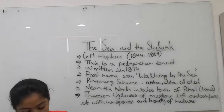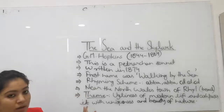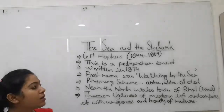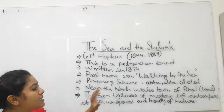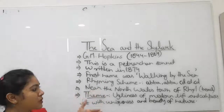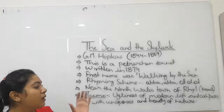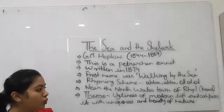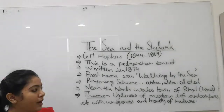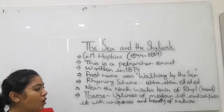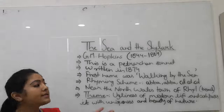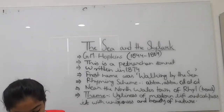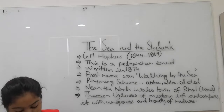The octave is purely descriptive. This is a sonnet — a 14-line poem. This is a Petrarchan sonnet, and as you all know, the Petrarchan sonnet's 14 lines are divided into two stanzas: 8 lines called the octave and 6 lines called the sestet. The octave gives details and imagery of the sea and skylark.